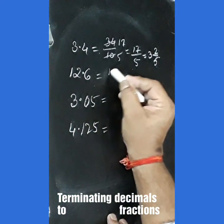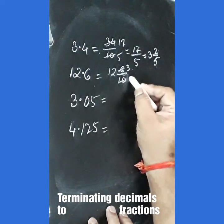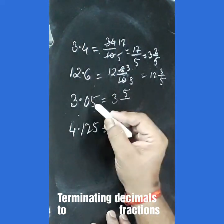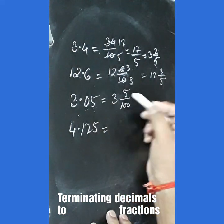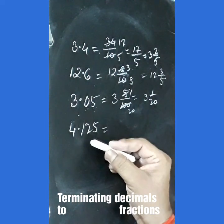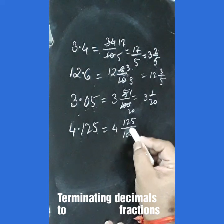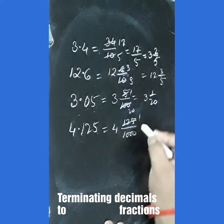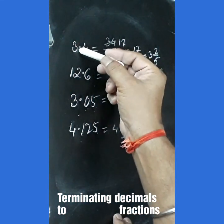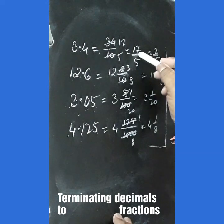For 3.05, there are 2 digits after the decimal, so we write it as 3 and 5 upon 100, which simplifies to 3 and 1 over 20. For 4.125, there are 3 digits after the decimal, giving 4 and 1 over 8. When the whole number part is other than 0, the fraction will be a mixed number or an improper fraction.